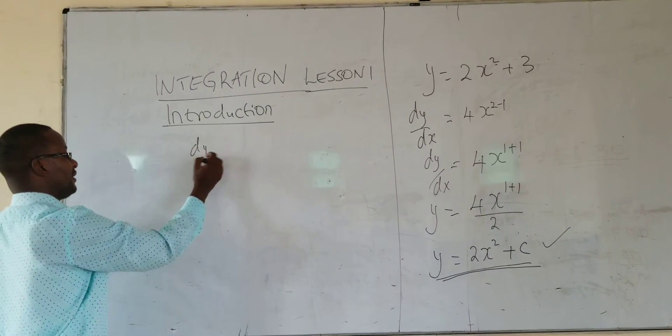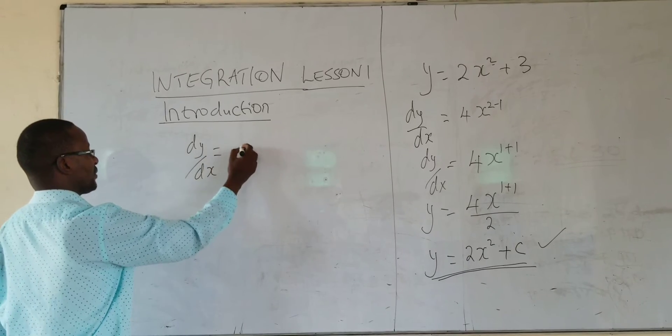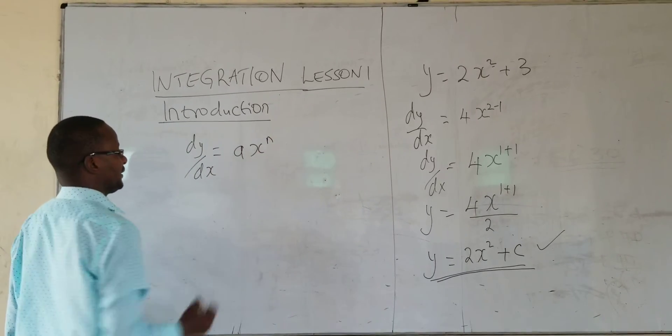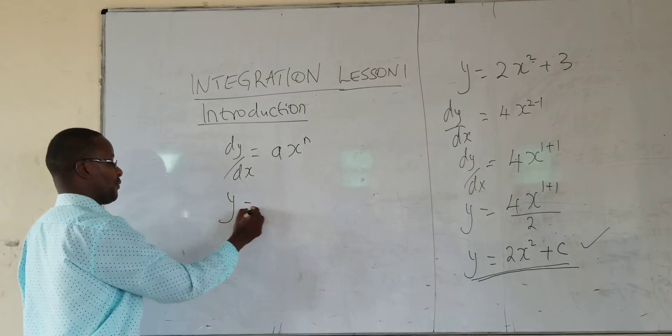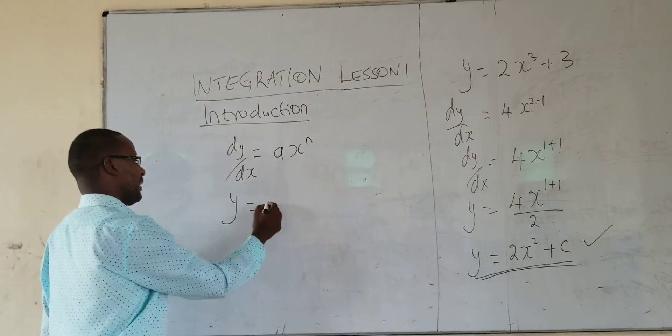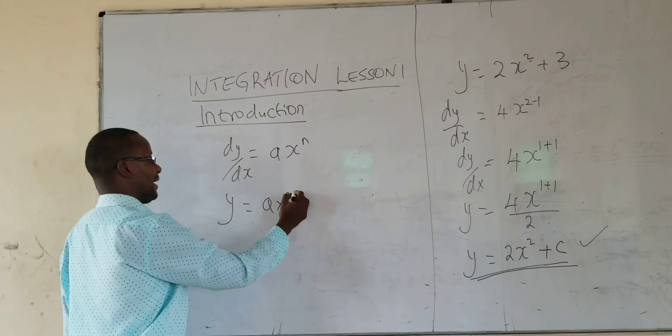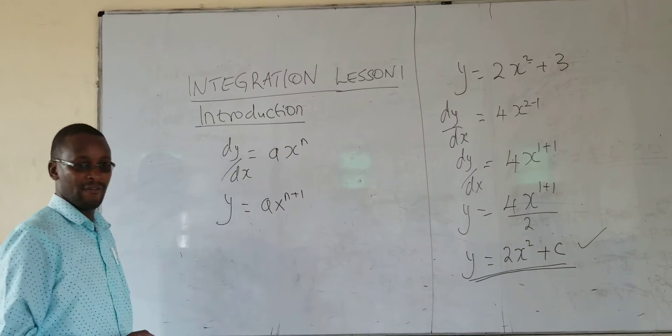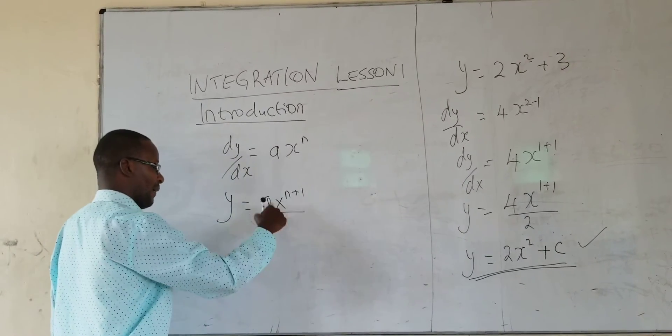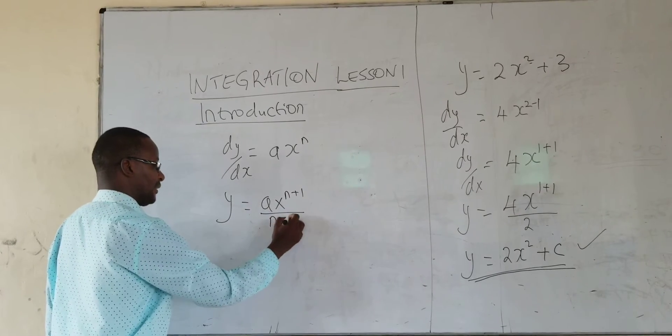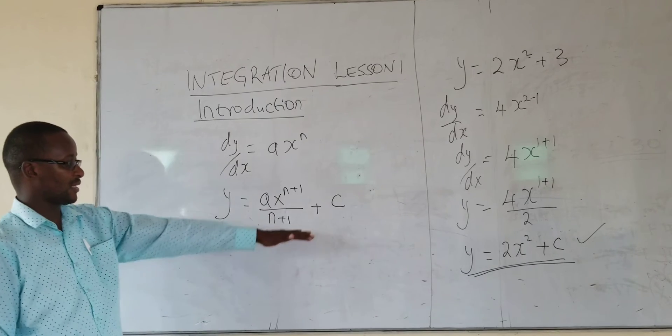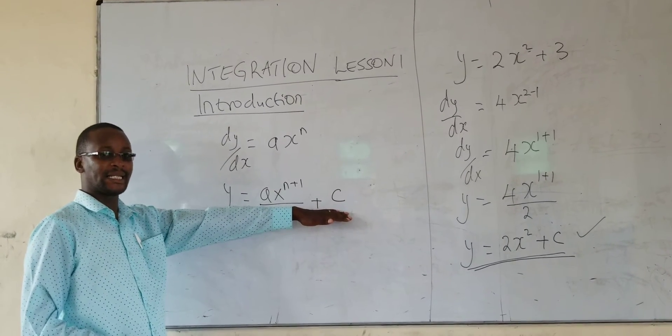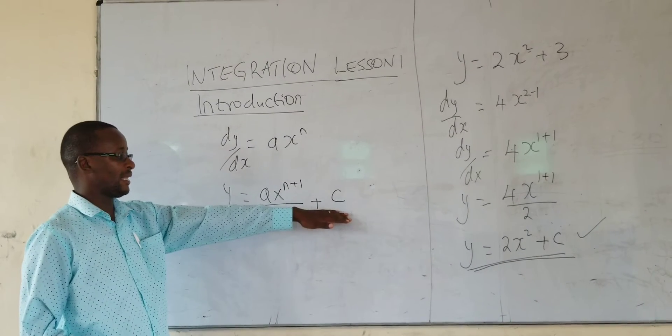So if I have dy over dx is equals to ax power n, and I want to get y, y will be equal to ax power n. I add 1 to the power of n. And then I divide by the whole power, that is n plus 1. And then you add a constant. Don't forget about this constant. Every time you integrate, remember to add the constant.